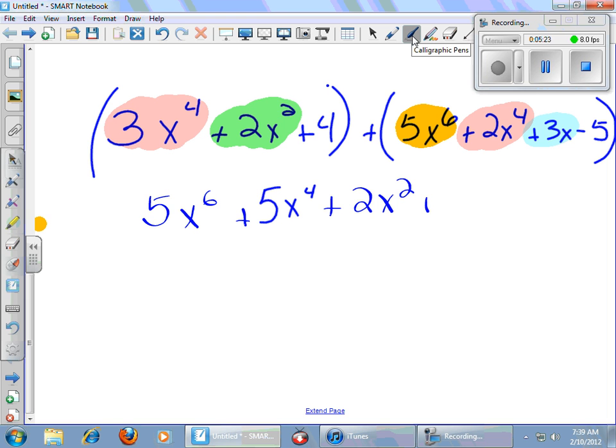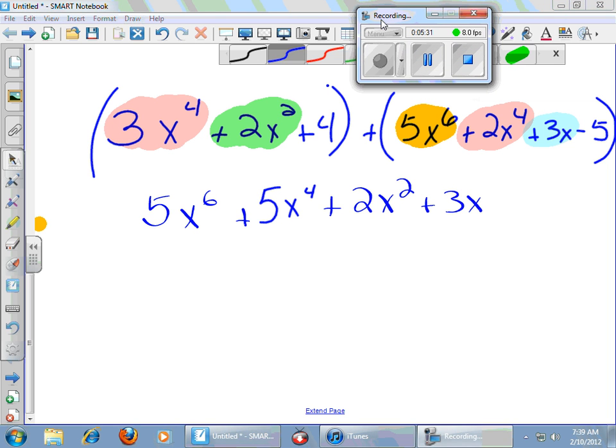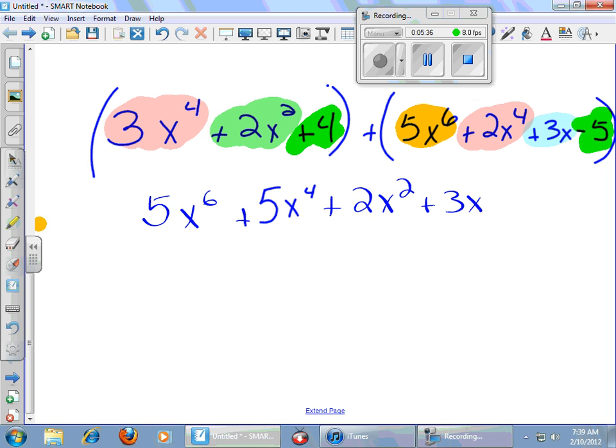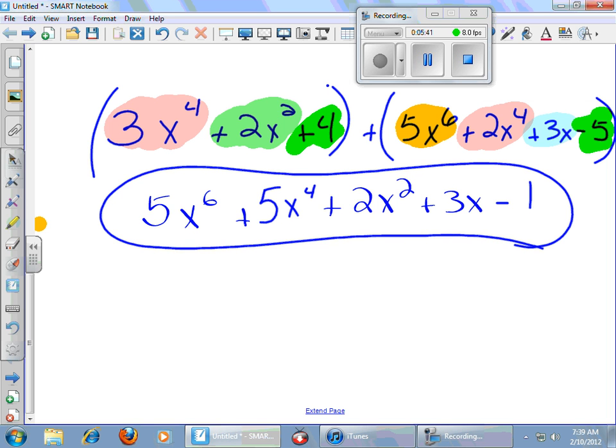All right, so there's only an x to the first term, 3x to the first term. And finally, I have my constants, and I have a positive 4 and a negative 5. Well, that makes a negative 1, and there you go. I just combined like terms. I added my monomials together.